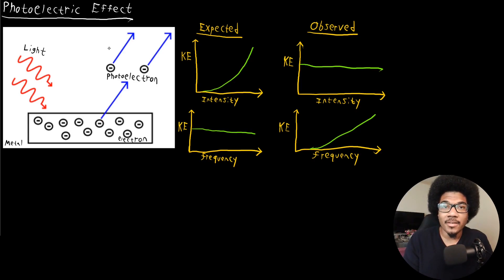In this video, we're going to discuss the photoelectric effect. This is another one of those examples of a classical mechanics failure that required a new physical model in order to understand what was being observed experimentally.